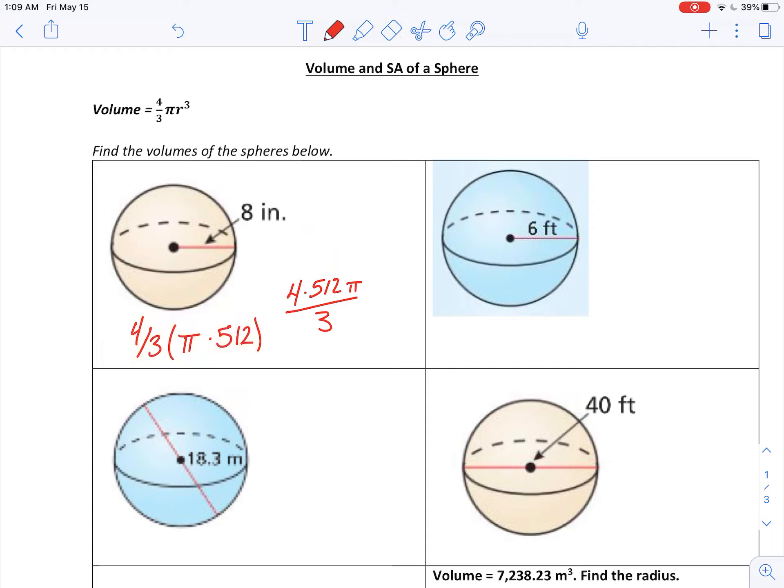Because you're going to see everything in exact form today. Same thing here, four-thirds pi times r cubed, so I'll substitute in that r. 6 cubed is 216. So 4 times 216, 4 thirds pi r cubed, and then if I simplify this, 864 pi over 3.